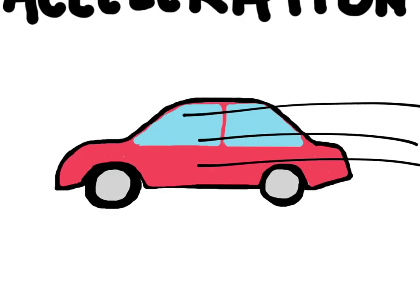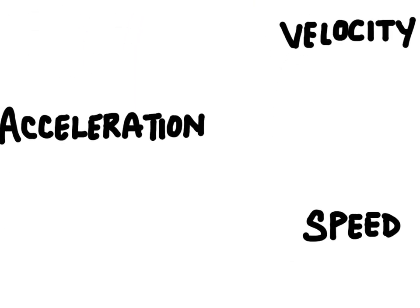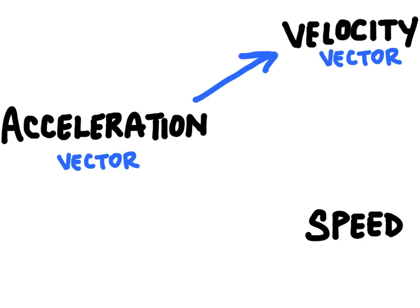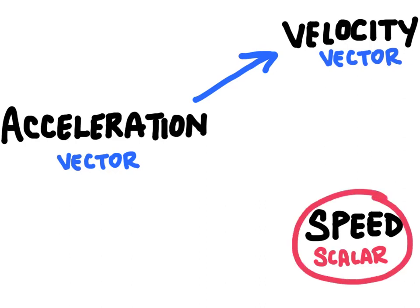In this video we're going to talk about acceleration. Acceleration is a vector, and a vector is a measurement that includes a direction. Acceleration is related to velocity because velocity is also a vector and also includes a direction. Speed, on the other hand, is a scalar — it describes how fast an object is going but does not include a direction. Scalars only have a magnitude, no direction.